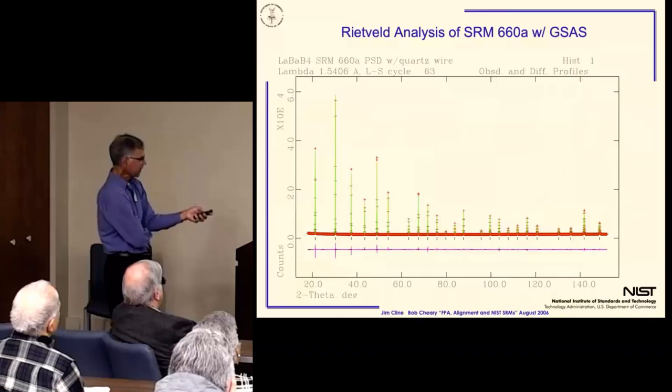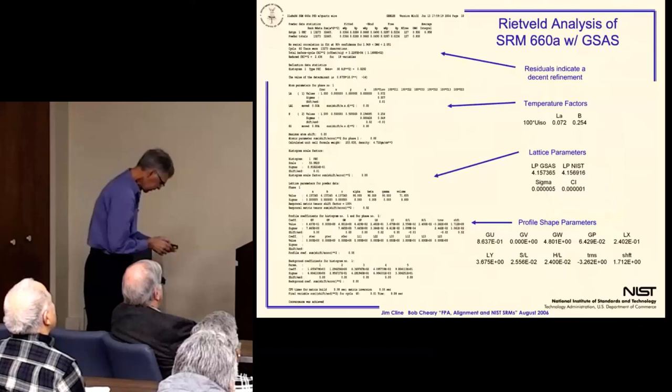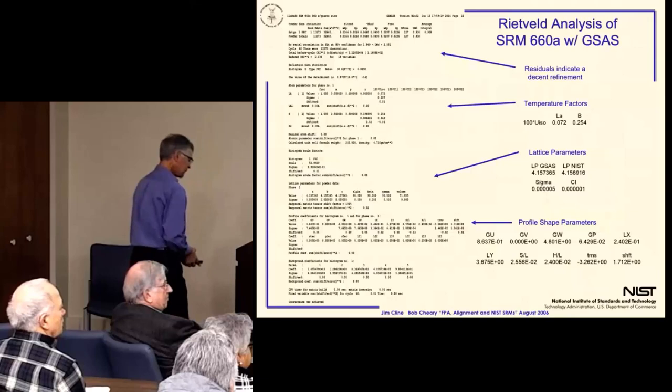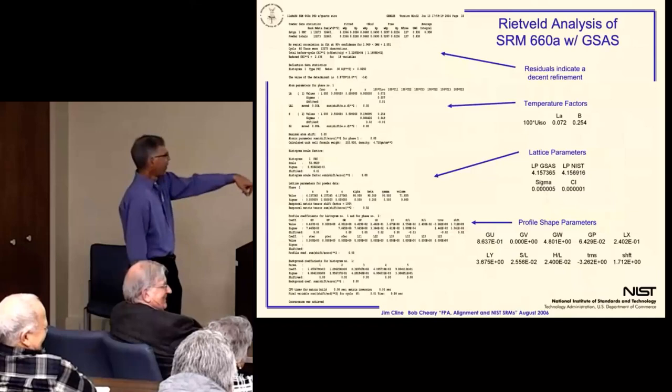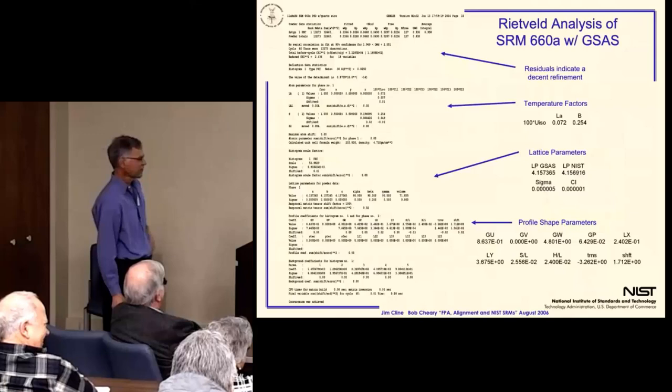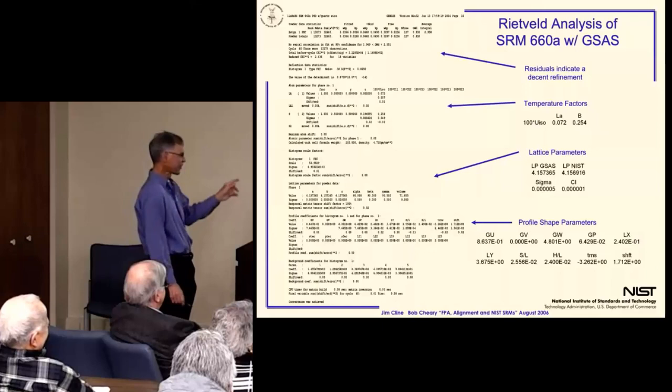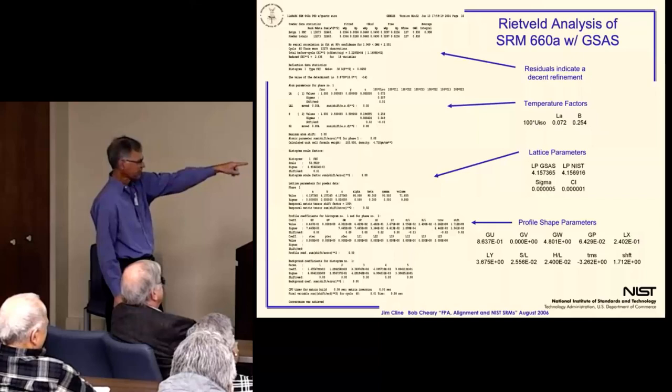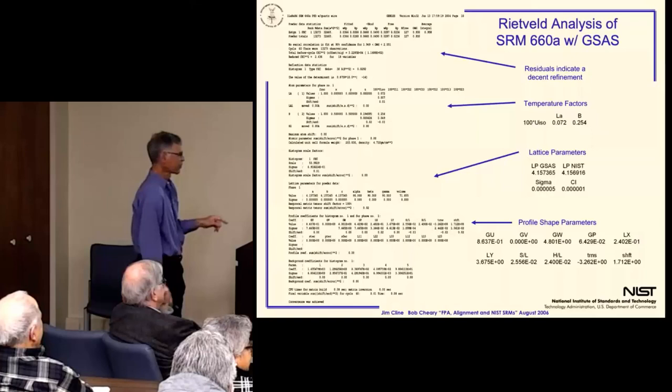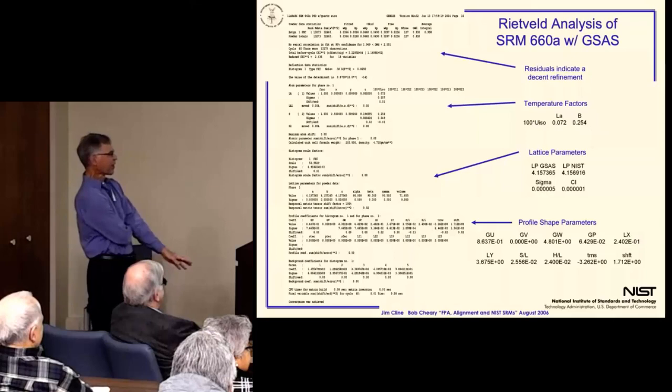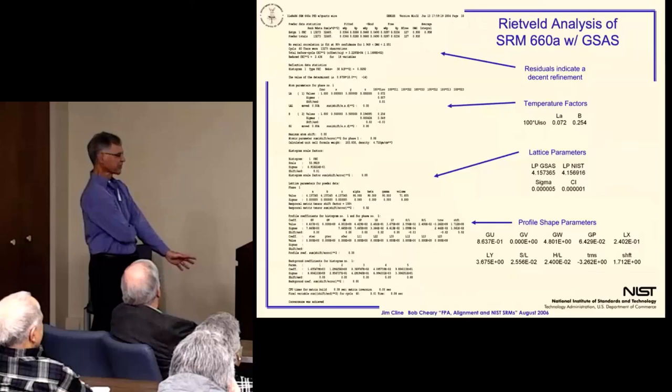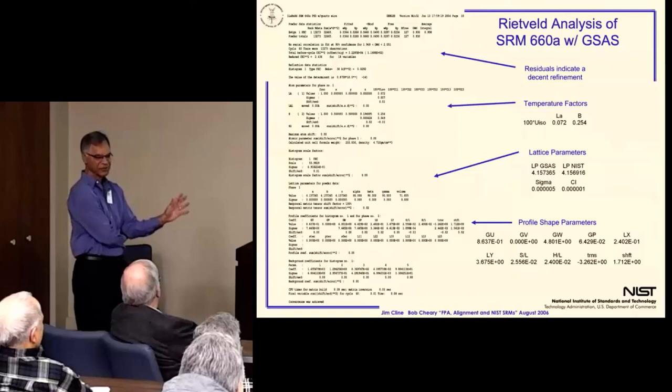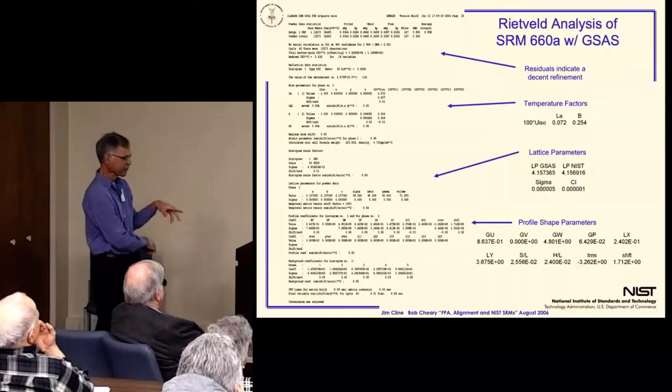So your basic LAB6 refinement. We'll start with the profile shape parameters. Sometimes the GCP would indeed go negative. If it goes positive, then you set it at zero and fix it. The G sub U and the G sub W are rational. The GCP is vanishingly small. The LX and LY are in decent correspondence. The parameters associated with the Finger model really didn't care whether or not you were using a standard or not, and once they refined to fixed value, you could shut them off. And the transmission or the transparency and the shift are specific to the sample, so you always refine that.